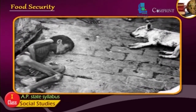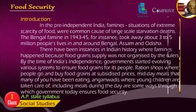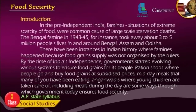By the time of India's independence, the government started evolving various systems to ensure food grains for its people — ration shops where people go and buy food grains at subsidized prices, midday meals, and Anganwadi bodies where young children are taken care of including meals during the day.